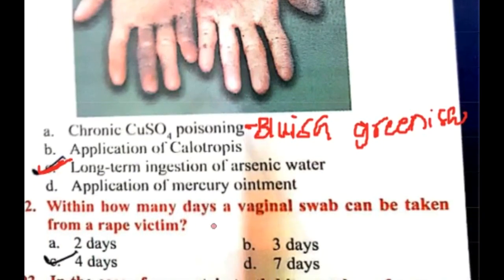How many days can a vaginal swab be taken from a rape victim? A vaginal swab can be taken from a rape victim up to four days.